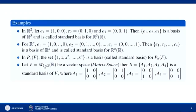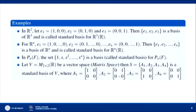Similarly, for all 2×2 matrices over R, taking A₁, A₂, A₃, A₄ as the four standard matrix units gives a standard basis for this vector space, since any 2×2 matrix can be expressed as a linear combination of A₁, A₂, A₃, A₄.